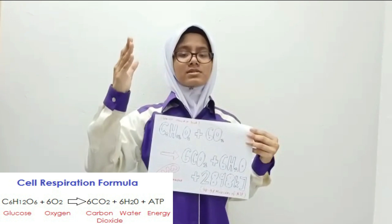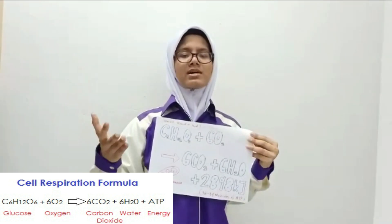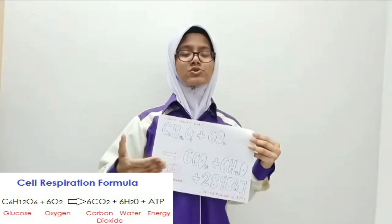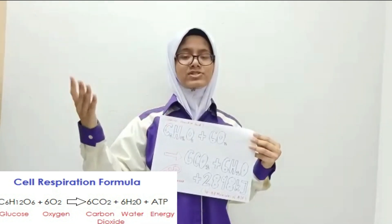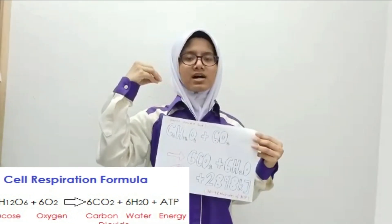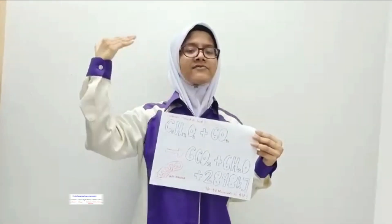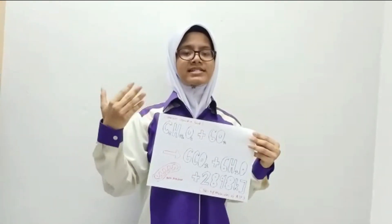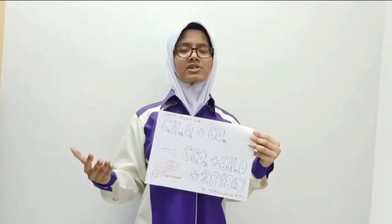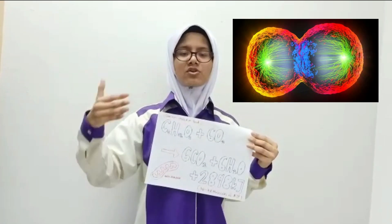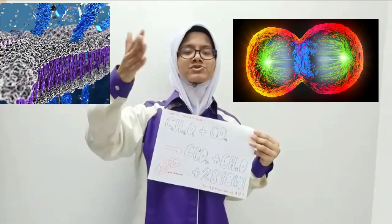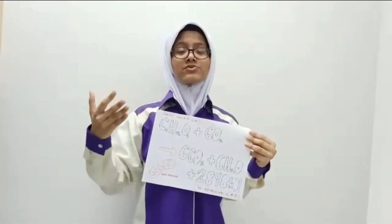During aerobic respiration, the number of ATP molecules produced is 36 to 38 molecules, which represents a high level of energy. ATP is used for cellular functions such as active transport, where substances are transported across the cell membrane.